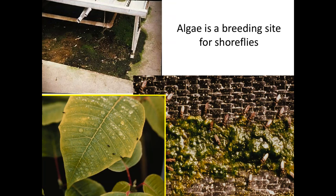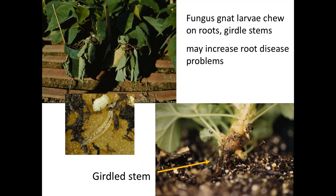If you're dealing with shore flies, the way to address them is to tackle the algae that are the source of the problem, where they're mostly feeding. There are products labeled for use whether on plants in pots or on the ground. For adult shore flies, Conserve or the organic version Entrust does knock them down very well. Fungus gnat larvae will chew on roots or girdle stems — we've seen damage to poinsettias and geranium seedlings that were girdled, sometimes causing very large areas of seedlings to be killed. Larvae have a small black head, which you won't see with shore fly larvae.